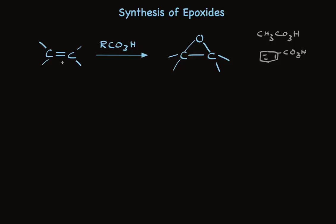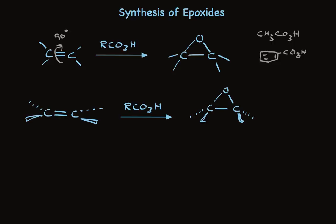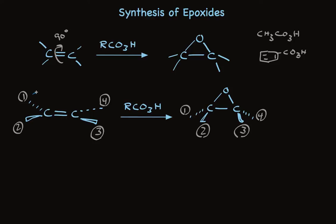I'm going to rotate this molecule 90 degrees so we can get a better look at the stereochemistry. This puts two of the alkene substituents toward us here on the wedges and two of the substituents back away from us on the dashes. Now we see that the peracid transfers in an oxygen and makes a three-membered ring with substituents two away and two toward us. I'm going to number those so we can track them.